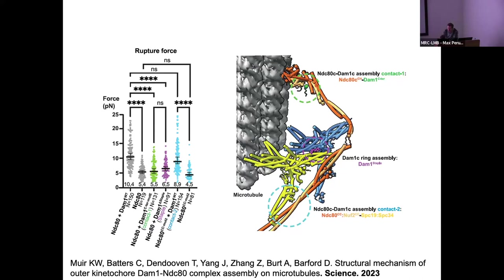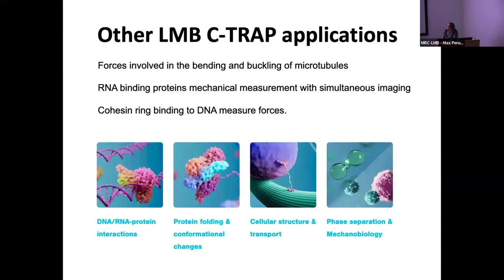Other things we're doing with the C-trap include looking at the bending and buckling of microtubules, and examining how drugs that bind microtubules affect stiffness. We have experiments looking at RNA tethered between beads, and we've just started experiments looking at the cohesin ring at the other end of the kinetochore and what forces are created with DNA. You can look on the Lumicks website where they have over 100 publications with their equipment covering the types of things that can be done.